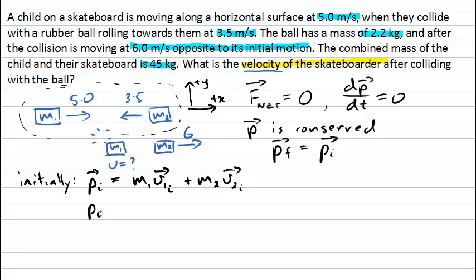So, for example, p initial in the x direction, what will that be? Well, we can see that the velocity of the skateboarder, m1 here, is going to be a positive quantity. So, I can just leave that as v, where v will equal 5.